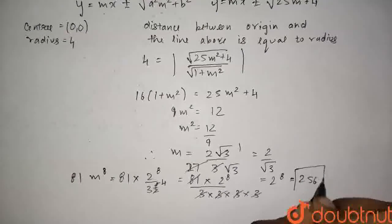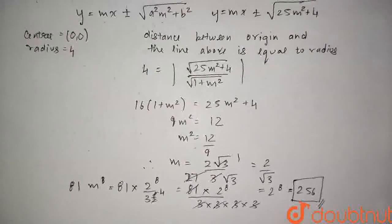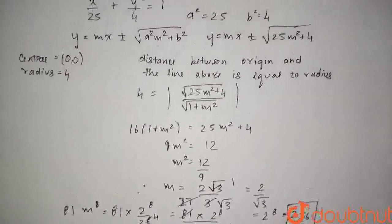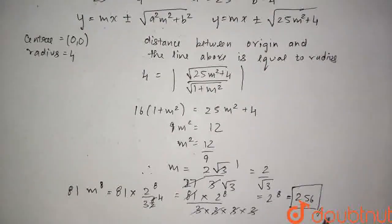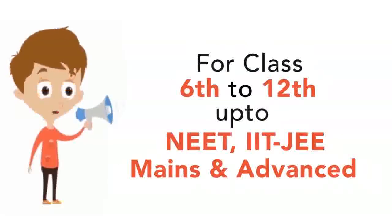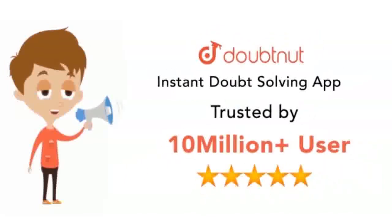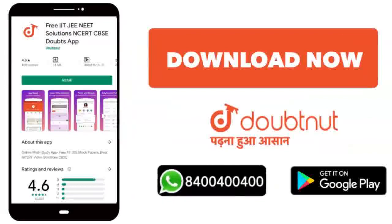This is the final answer for this question: 81 into m to the power 8 equals 256. Thank you so much.